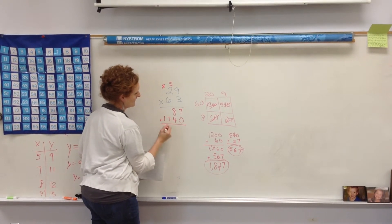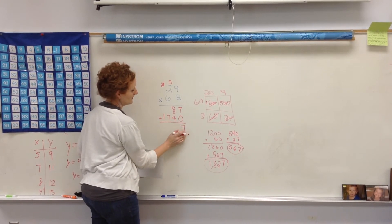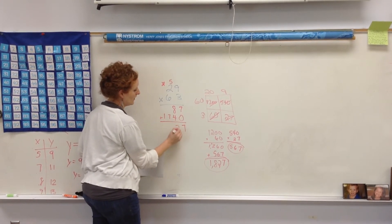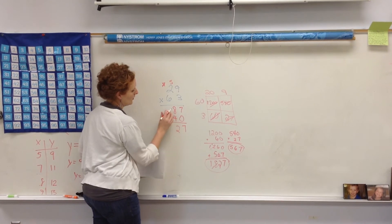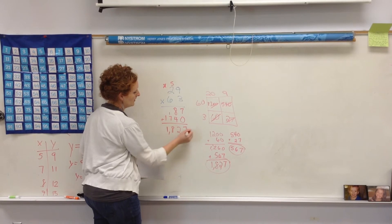Let's cross it out because I've finished that one already. 6 times 2 is 12 plus that 5 is 17. Now, I'm going to add it together. So, I have 7 plus 0 is 7. 8 plus 4 is 12. 1 plus 7 is 8. And then, I've done my final one.